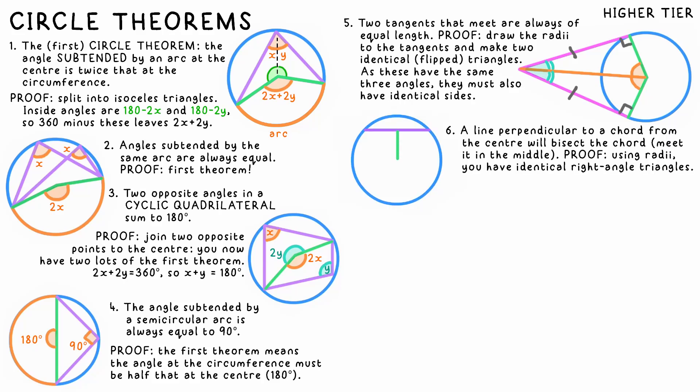If you have a chord and draw a line to the center of the chord, they will be perpendicular. This is merely because we now have two identical but reflected right angle triangles, meaning the lengths must be equal.